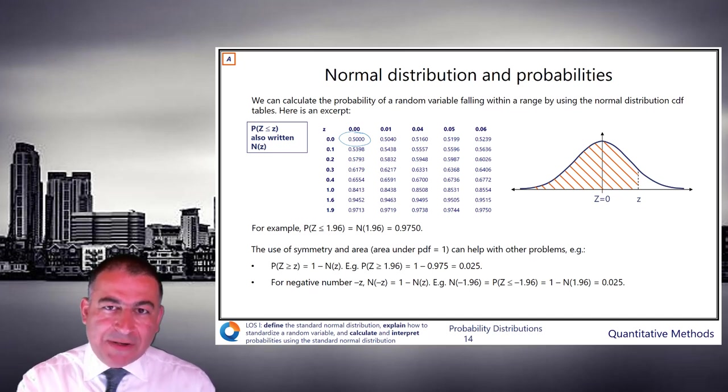What's the probability that an N01 variable is less than plus 1.96? Think about it. Plus or minus 1.96 captures 95%. Therefore, the top tail is 2.5%. So the chances are 97.5% that we are less than 1.96.